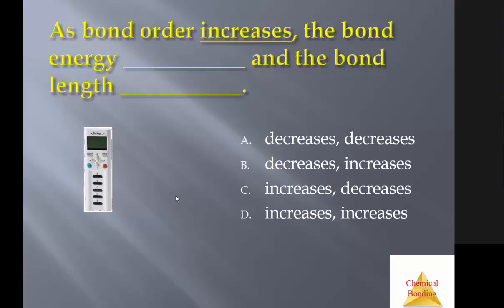As bond order increases, what happens to the bond energy? And as bond order increases, what happens to the bond length? I'll give you a couple seconds to think about that. One, two. There's your answer. As bond order increases, the bond energy increases. And the bond length decreases.